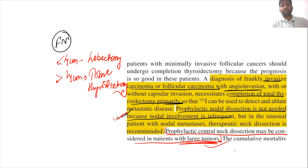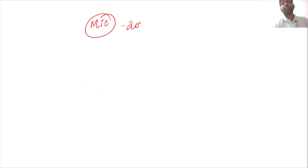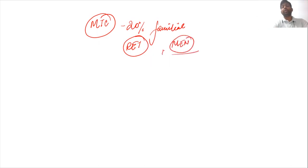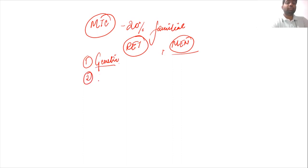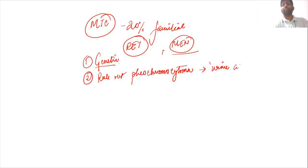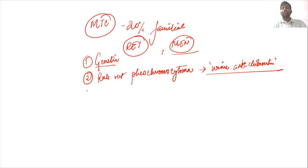For medullary thyroid cancer, management differs because approximately 20% of cases are familial, associated with RET gene mutation and MEN syndrome. First, perform genetic study to determine if the patient is a RET mutation carrier. Next, rule out pheochromocytoma — 24-hour urine VMA is the gold standard, more reliable than imaging. If pheochromocytoma is found, treat it first before managing medullary thyroid cancer.